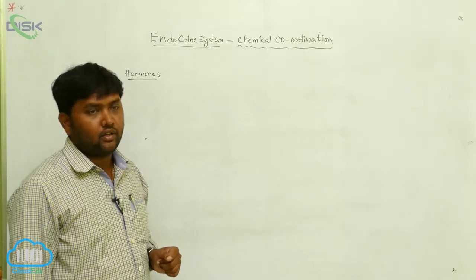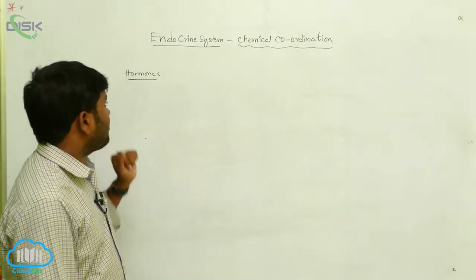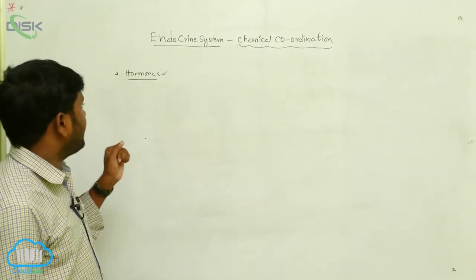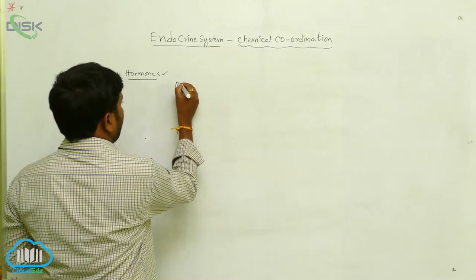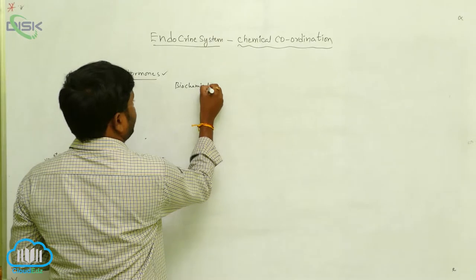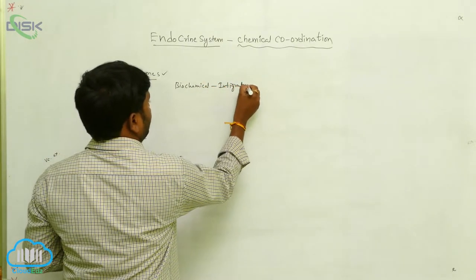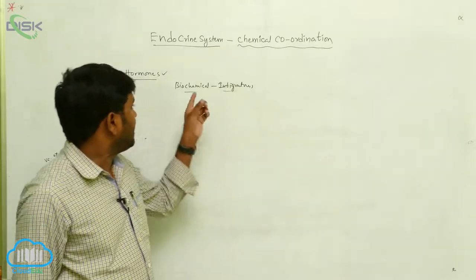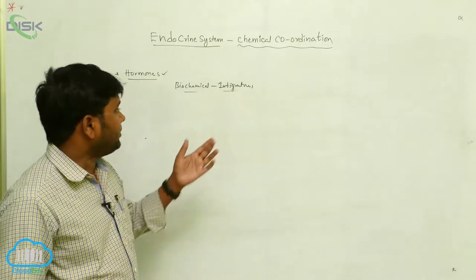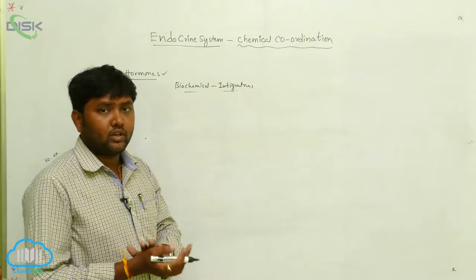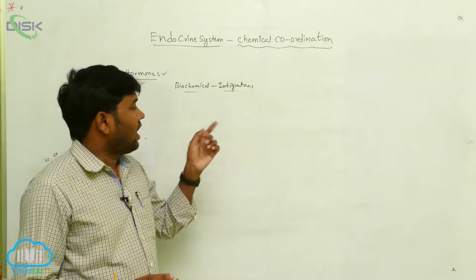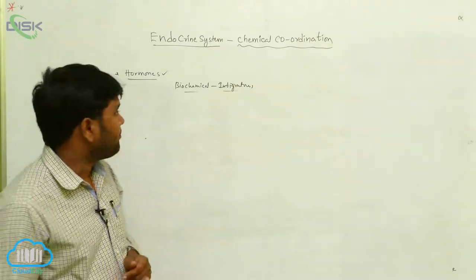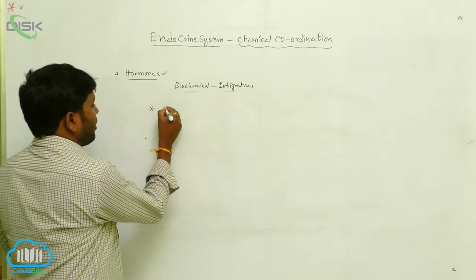The endocrine system is based on hormones as its basic concept. Hormones are called biochemical integrators because they are released into the blood and transported to different tissues or organs, causing those organs to work more effectively. The endocrine secretions are released into the body's circulating body fluids.